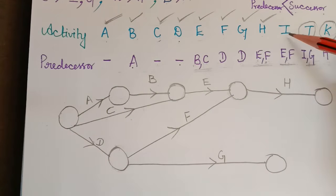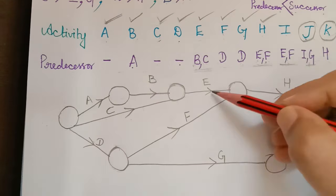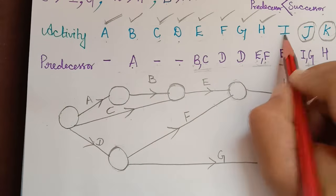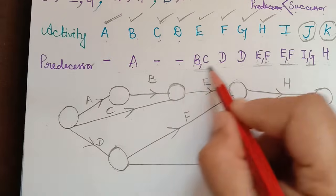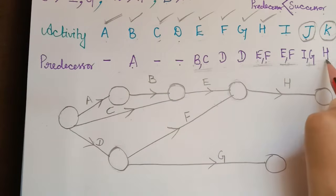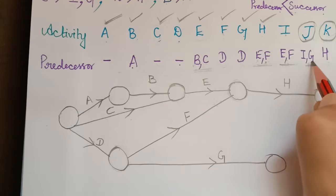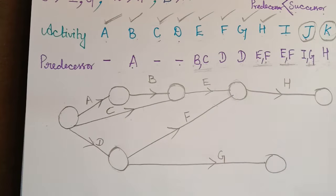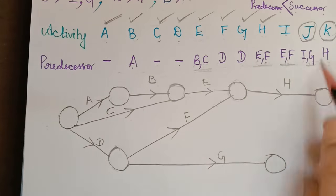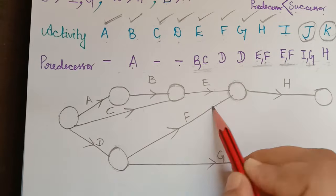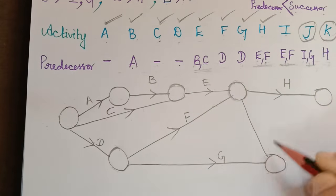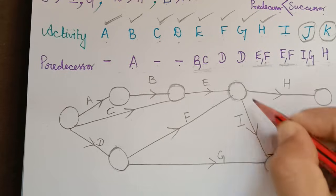Next is activity I. Its predecessors are E and F, so the starting point is the same shared end node as H. Checking the list, I appears along with activity G, which has already been constructed. So the end node of I must be the same as the end node of G. We draw activity I accordingly.